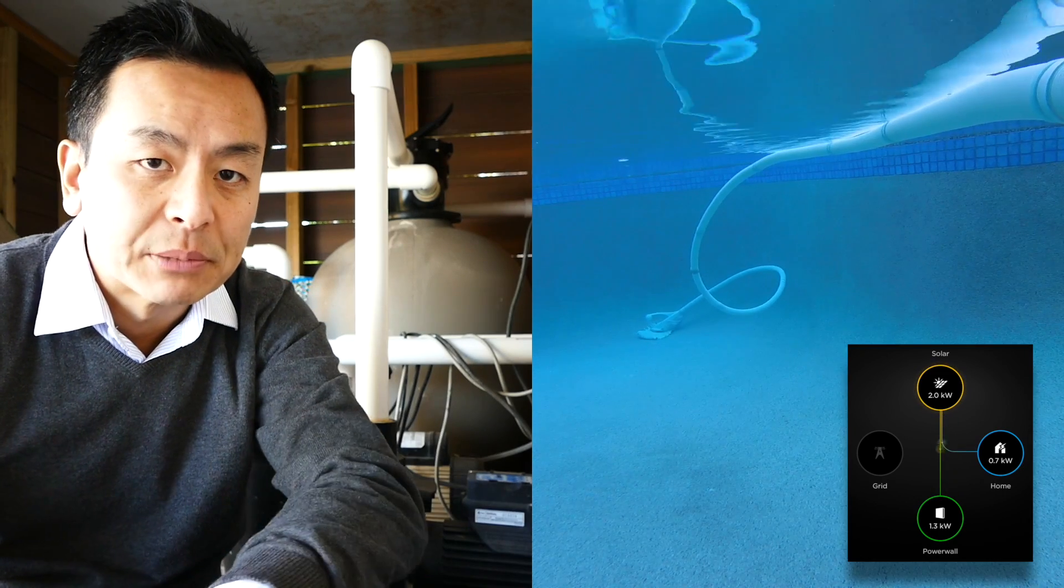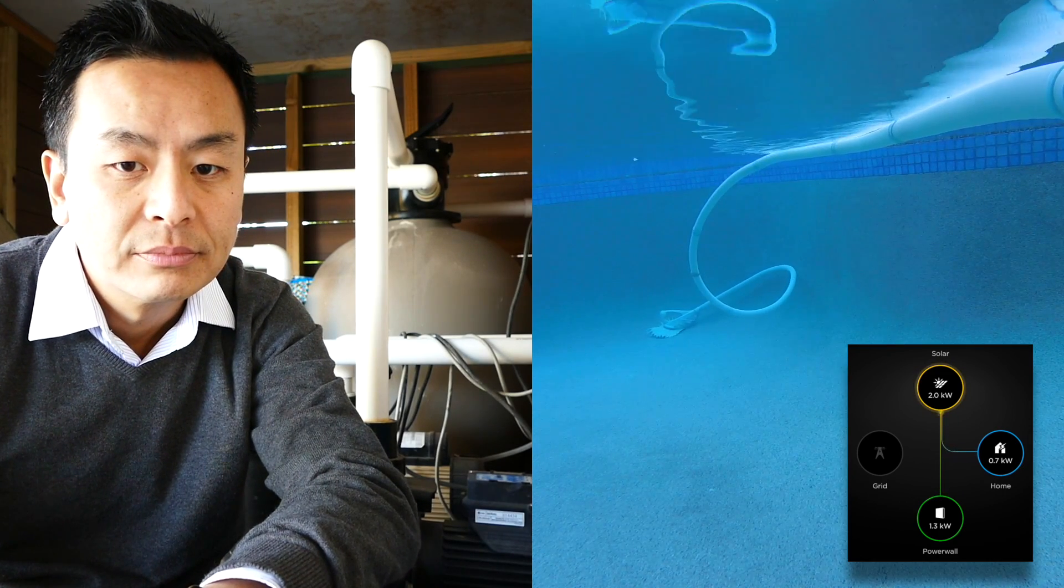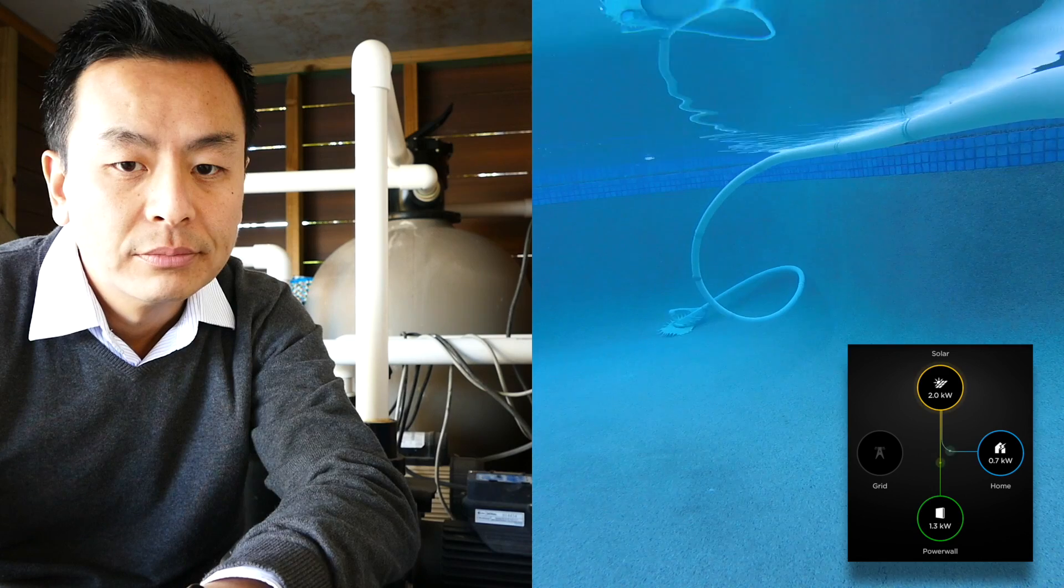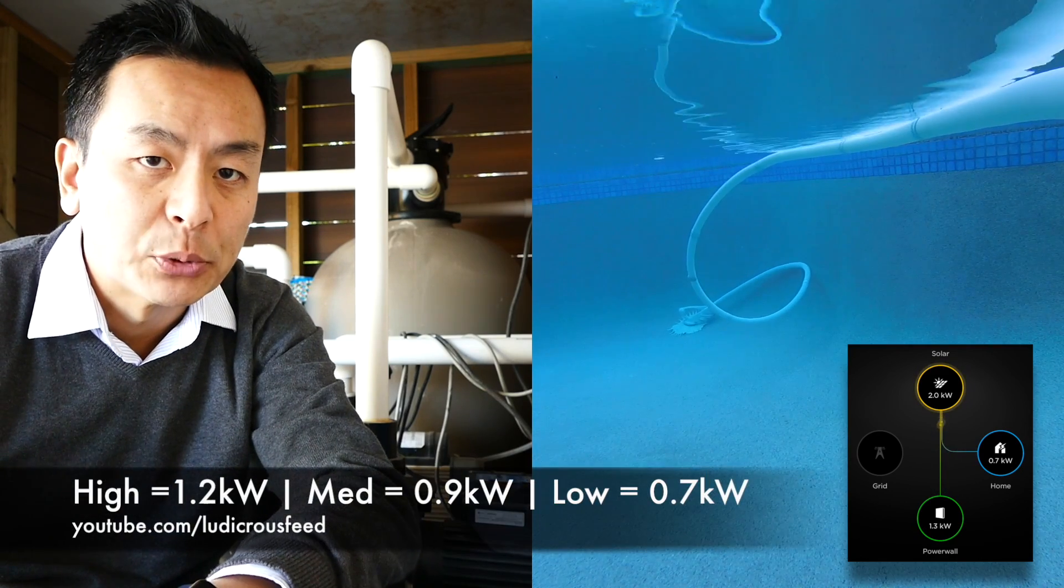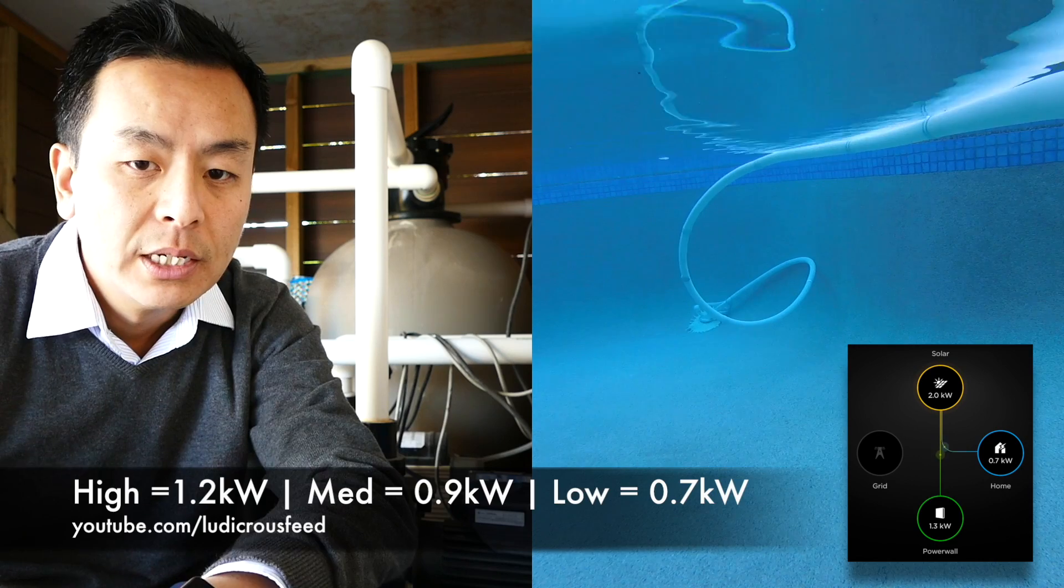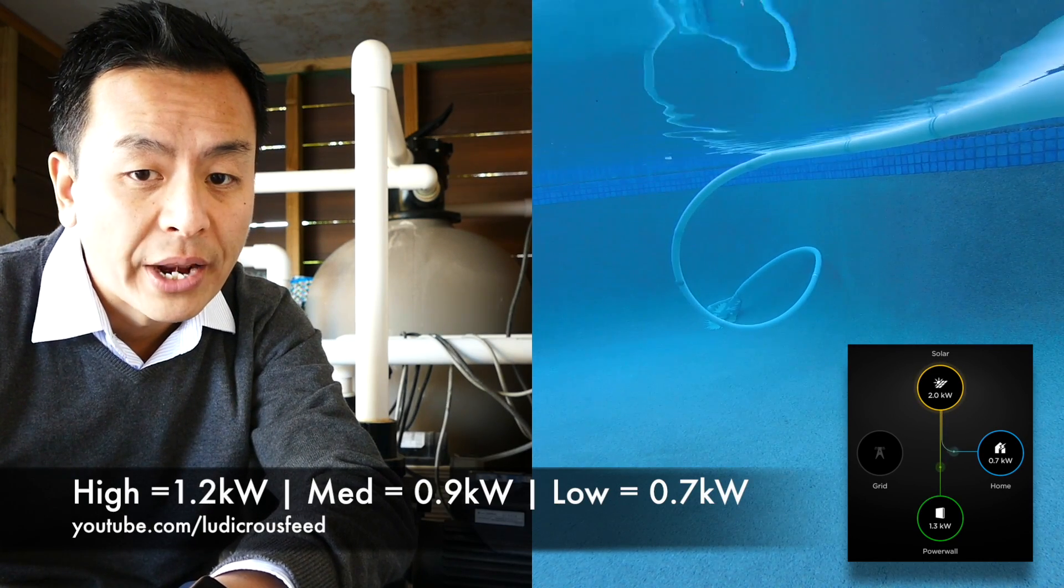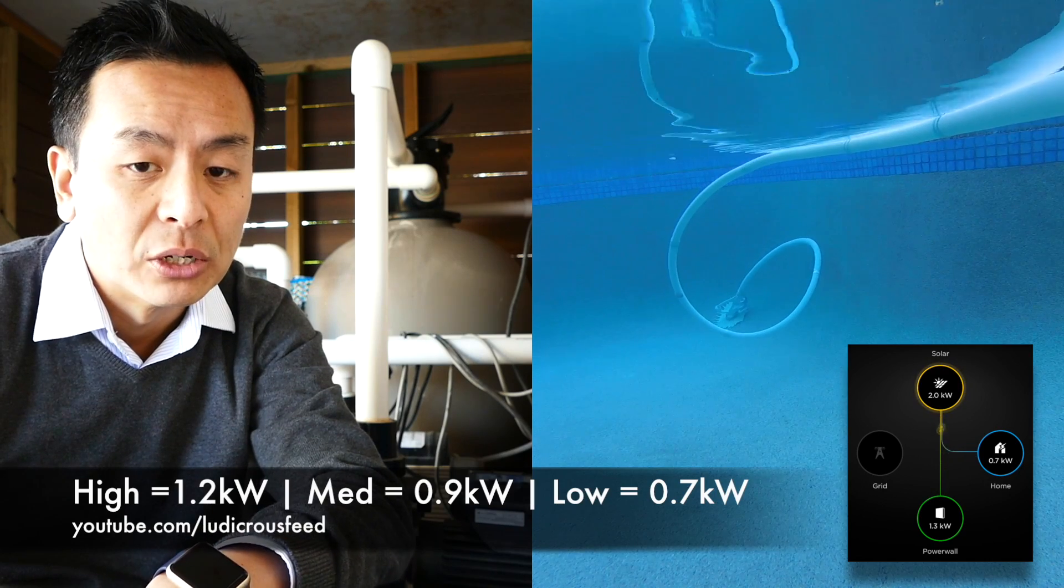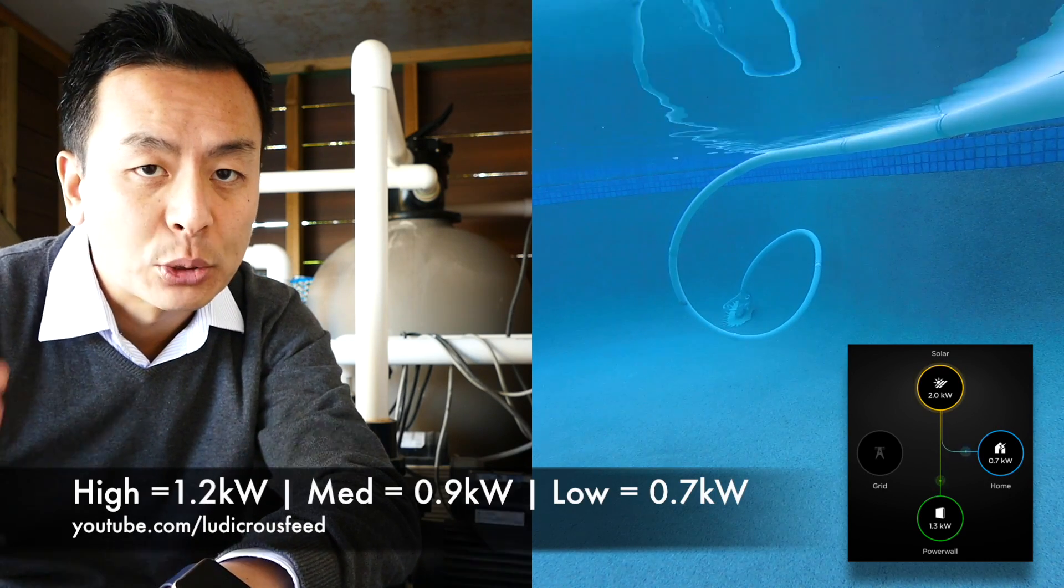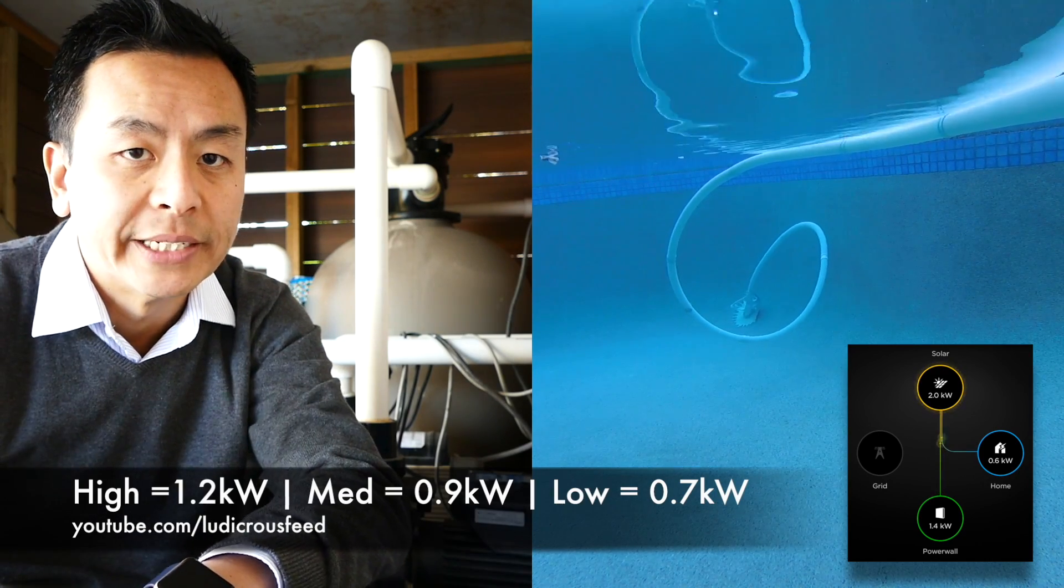Let's just say baseline is 0.2. So a bit of a difference between high, medium and low. High was about 1.2. Medium was about 0.9 to 1. And currently on low it's 0.7. So about a 200 watt difference or increment between each setting.